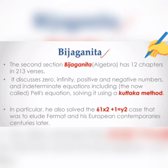The second section, Beej Ganit (algebra), has 12 chapters in 213 verses. It discusses zero, infinity, positive and negative numbers, and indeterminate equations including the Pell equation.